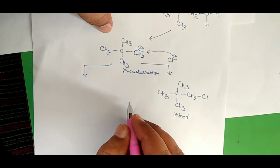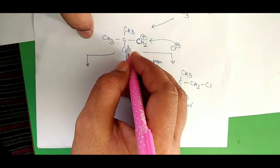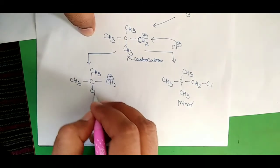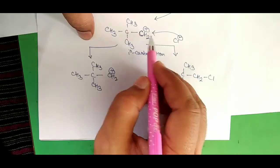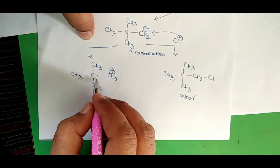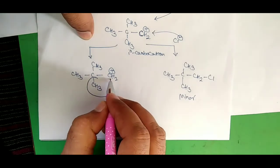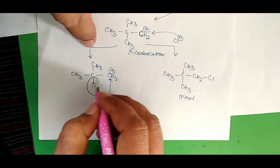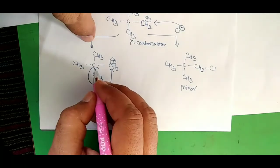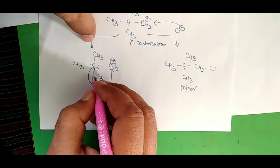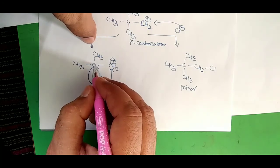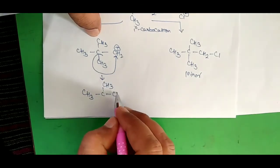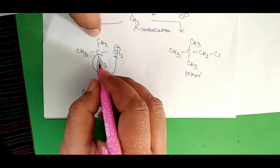In the second possibility, keeping the same step: we have CH3, CH2, with the positive charge on this carbon, and here is the methyl group. Now what will happen is that this methyl group, with its bonding pair of electrons, will shift here. So if this methyl with its bonding pair shifts, it becomes part of the chain, and therefore this carbon will carry a positive charge because that bonding pair has been broken from it.